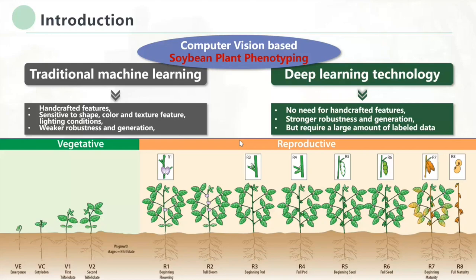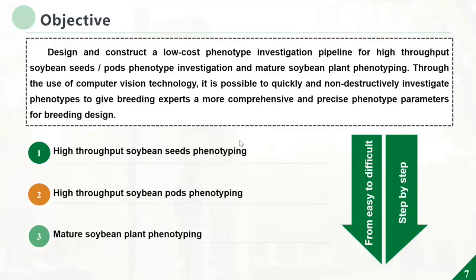Recently, deep learning technology has become more and more popular for crop phenotyping. We don't need to design handcrafted features, but training an accurate deep learning model requires a lot of labeled data. We designed a low-cost phenotype investigation pipeline for high-throughput soybean seeds, pods, phenotype investigation, and mature soybean plant phenotyping. Through computer vision technology, it is possible to quickly and non-destructively investigate phenotypes and give breeding experts more comprehensive and precise parameters for breeding design.